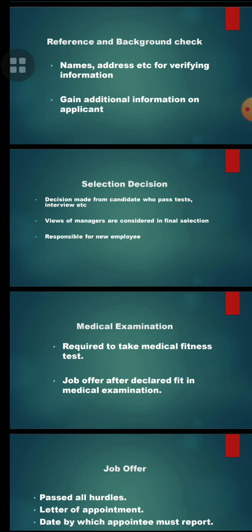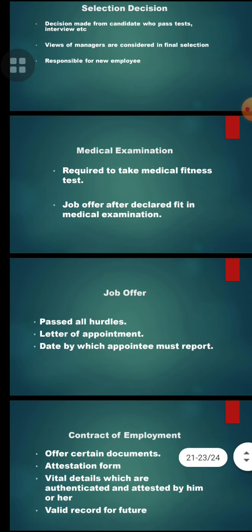The seventh one is the job offer. Once the candidate has passed all hurdles, they receive a letter of appointment. The letter of appointment includes the date by which the appointee must report, and all relevant details about when and where they should come.